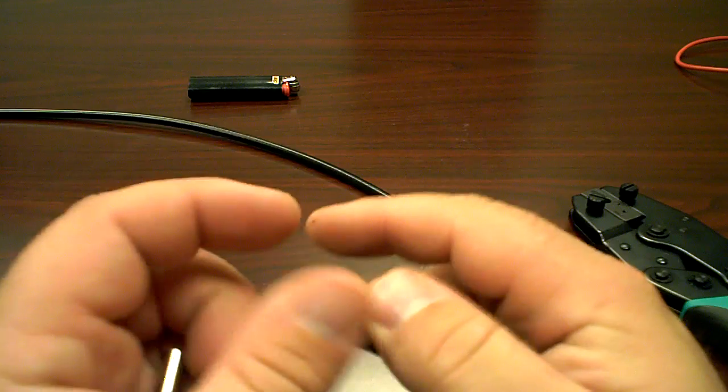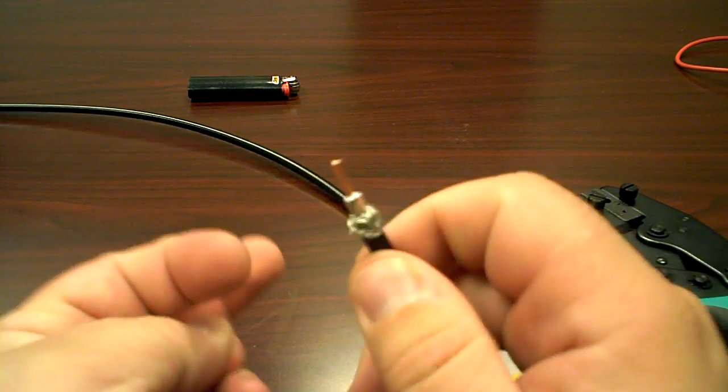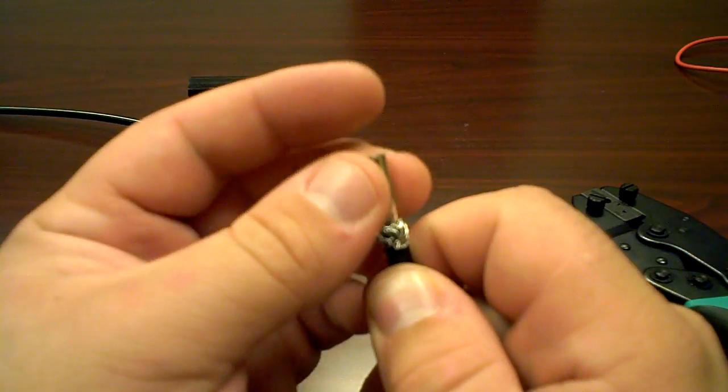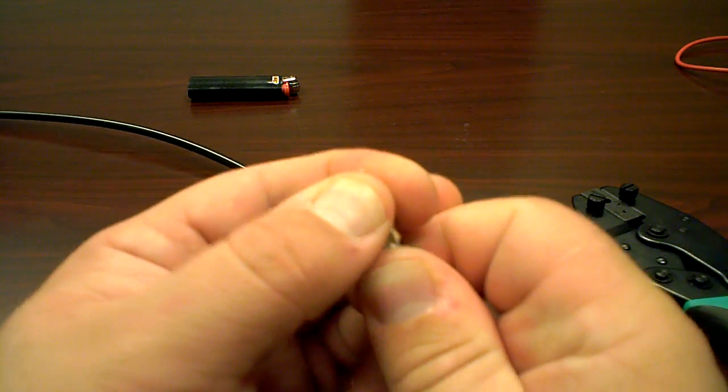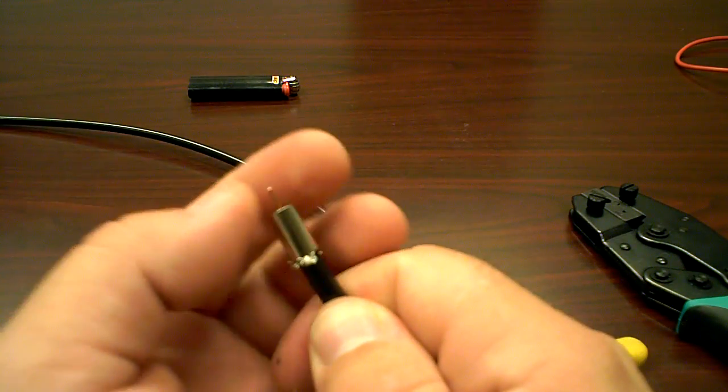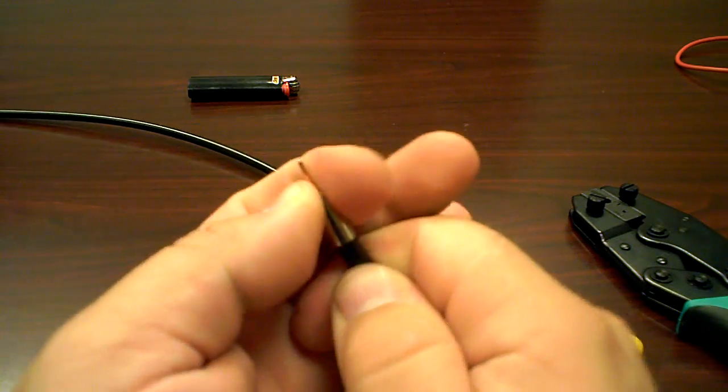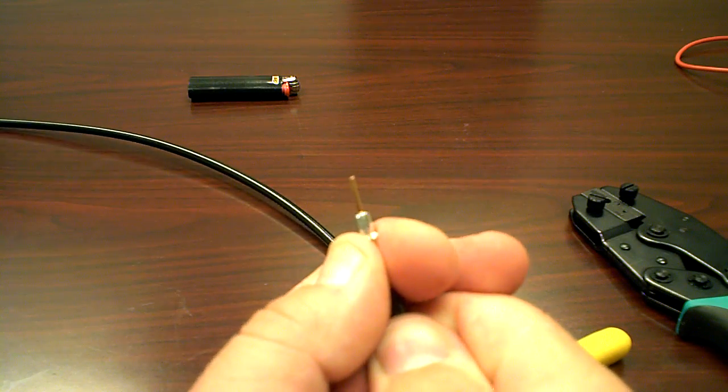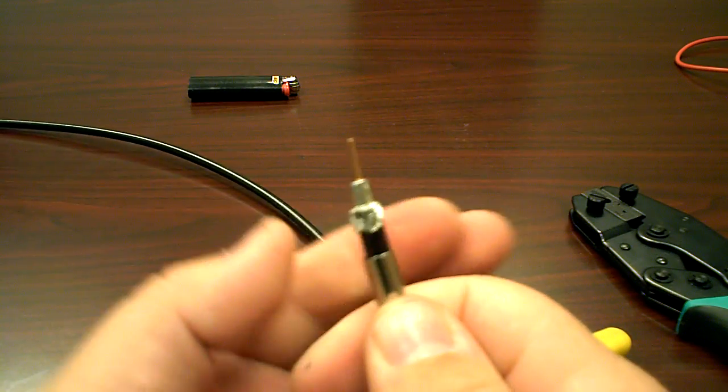So basically you're going to slide that on first. Next is going to come the actual silver trim ring. And I always peel my braid back first and then force this on. For a simple reason, it peels it back, it makes it really smooth.